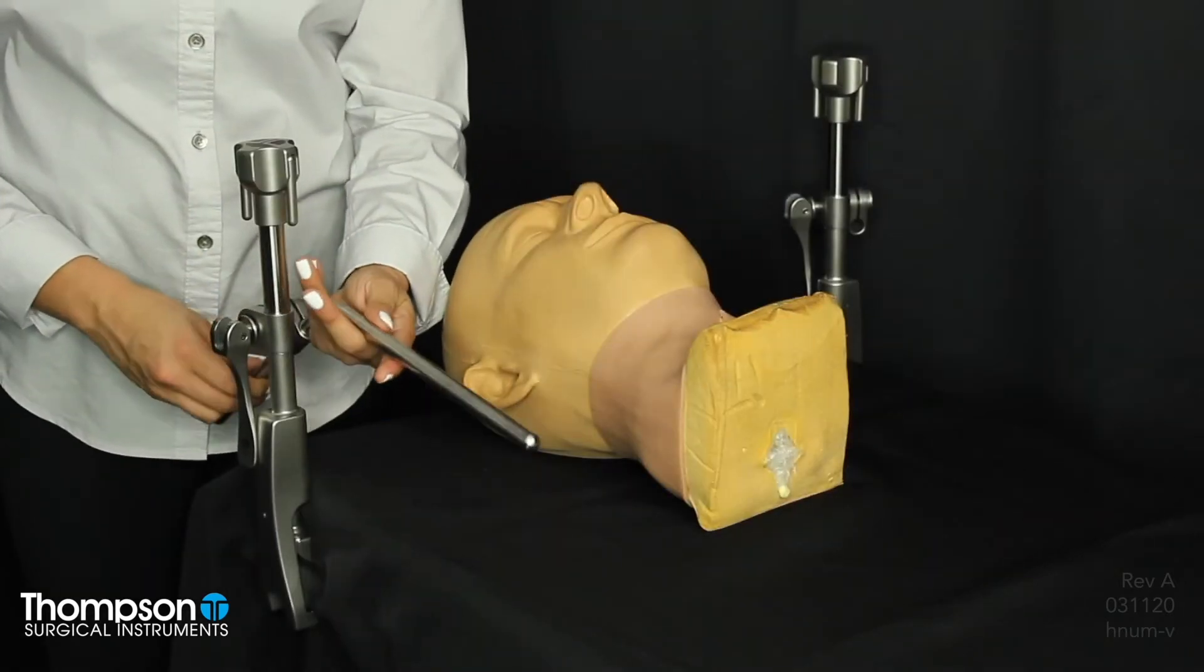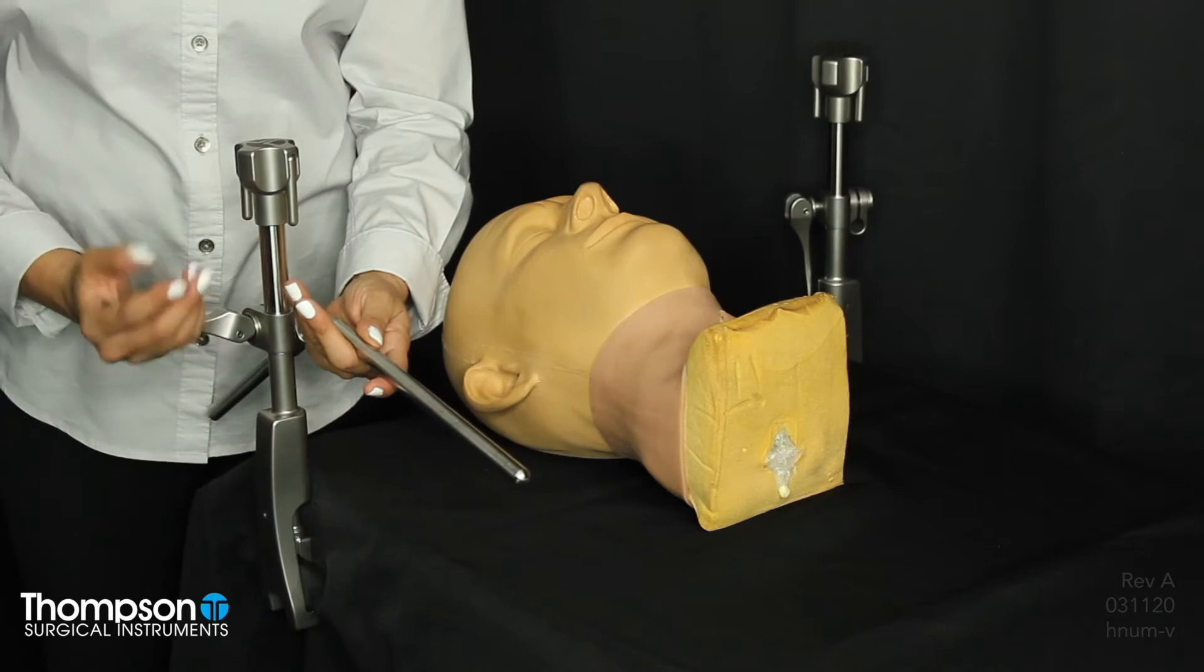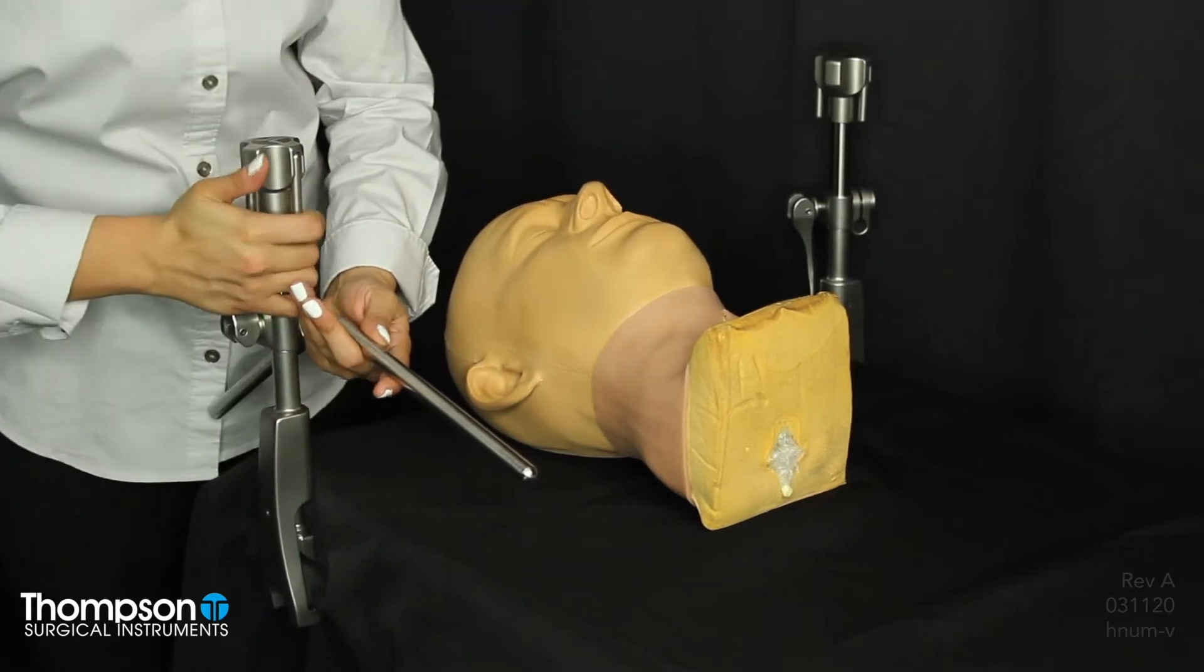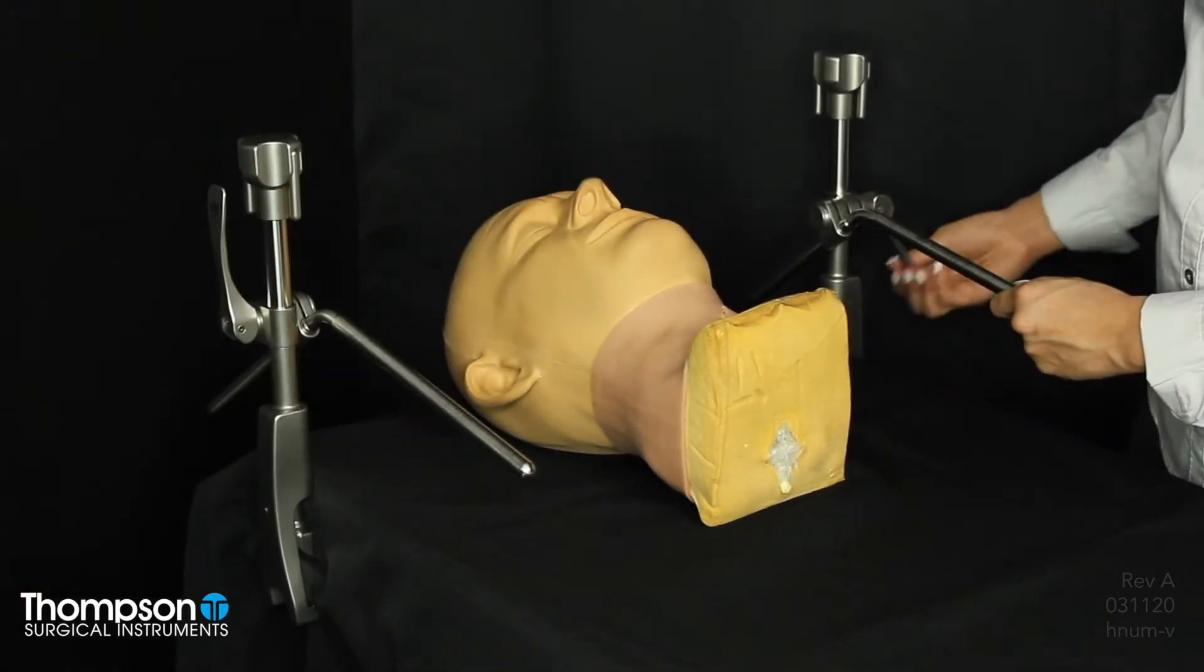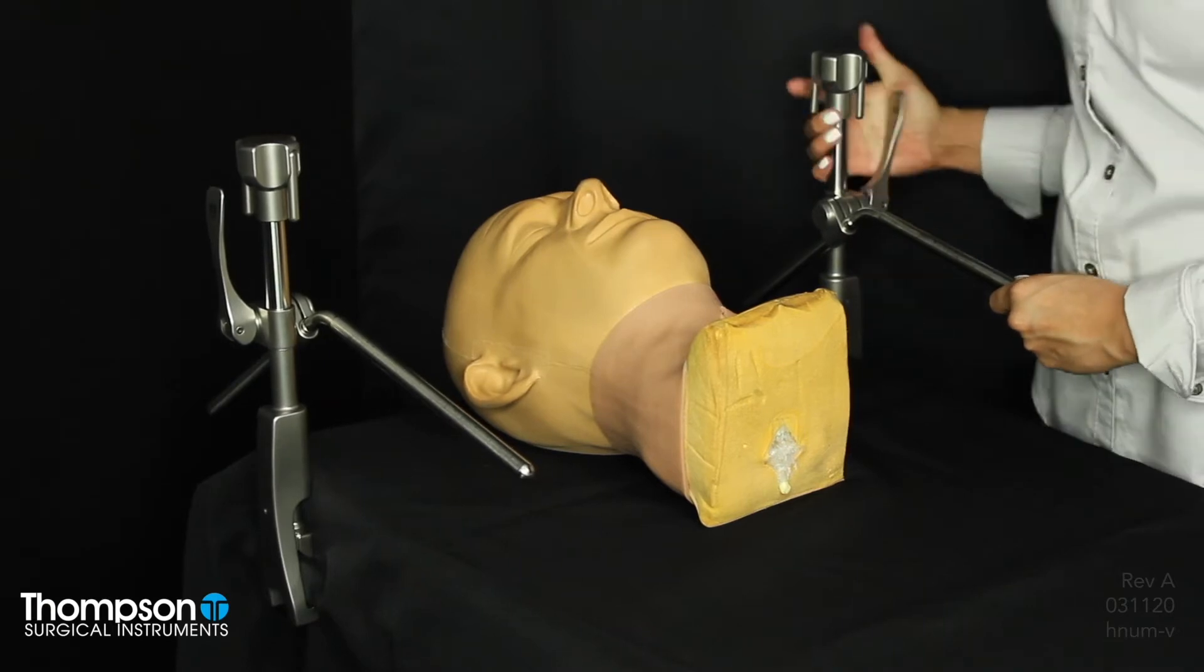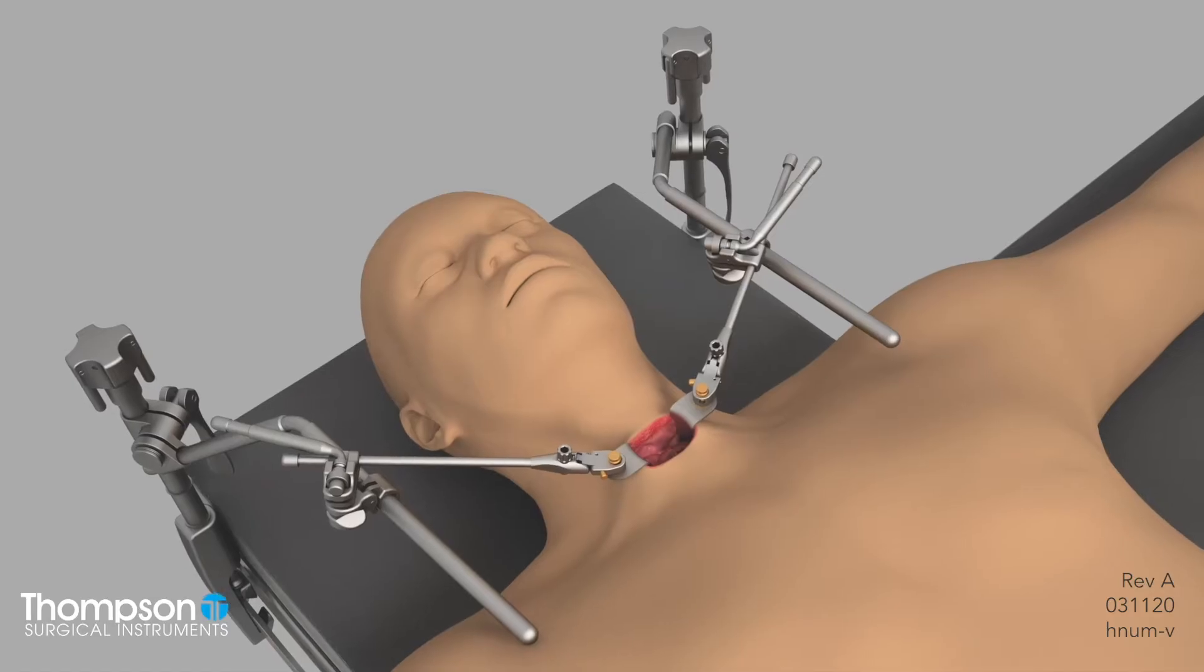Next, insert the lateral arm into the rail clamp's joint. Position low and wide, level with the incision. Repeat this position with the second lateral arm on the opposite side of the table.